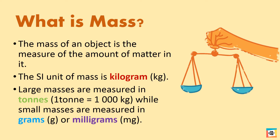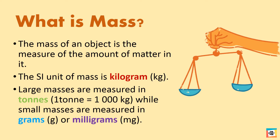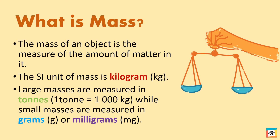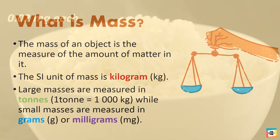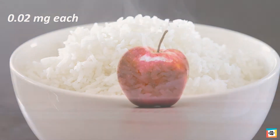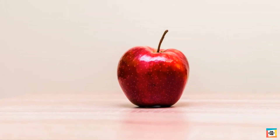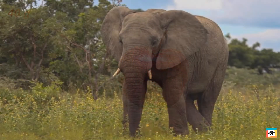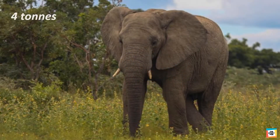Large masses are measured in tons, while small masses are measured in grams or milligrams. Each grain of rice has a mass of about 0.02 milligrams. An apple has a mass of about 40 grams, and an elephant may weigh about 4 tons.